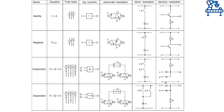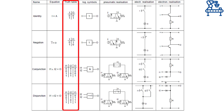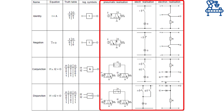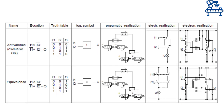This table shows a summary of logical operations. The second column contains the Boolean equation for each logic function — note the symbol used for representing the functions. The third column shows the truth table for each function, whereas the fourth column contains the ISO symbol for the corresponding functions. Moreover, the fifth, sixth and last columns contain the pneumatic, electrical and electronic circuit schematics used for implementing the corresponding functions.